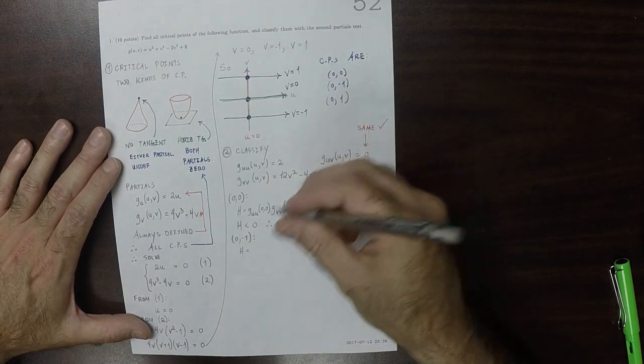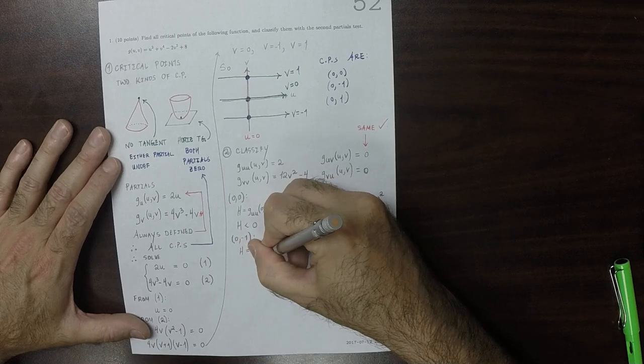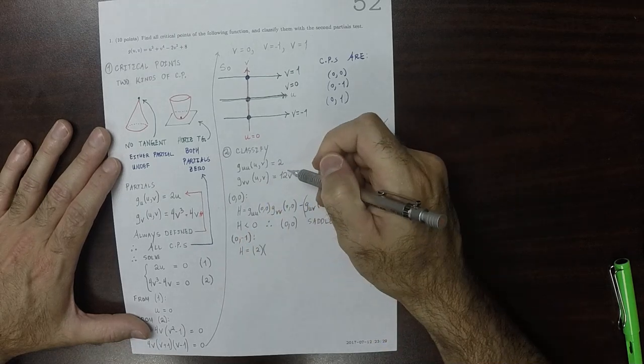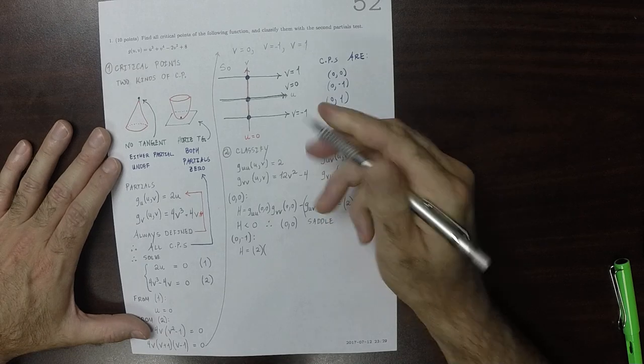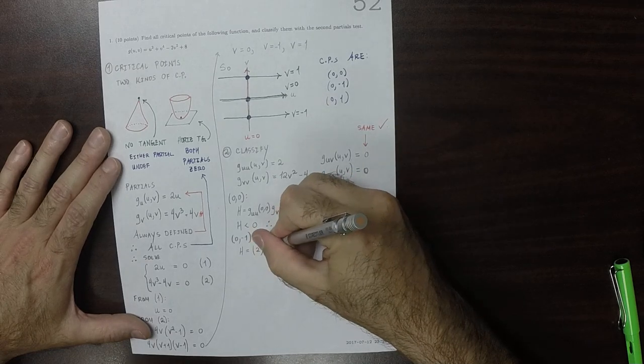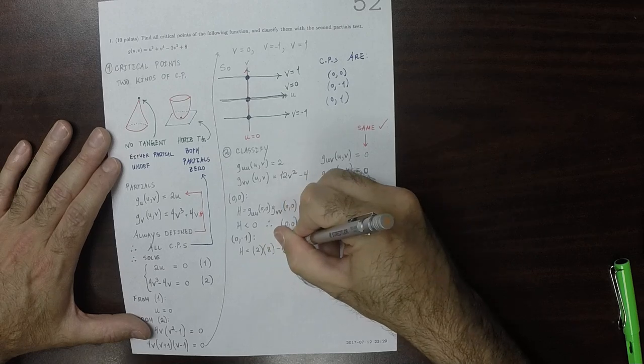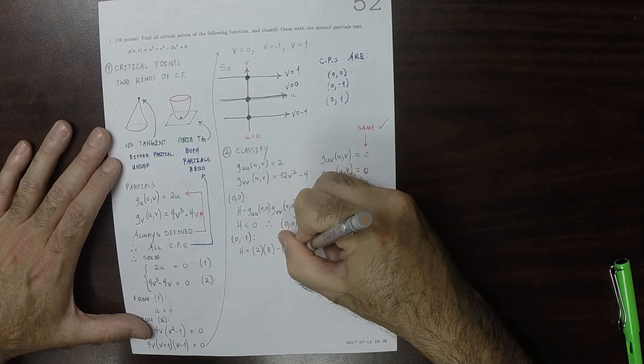The pure V partial, VV, at zero, negative one, is eight. And then minus zero squared. And that's positive.